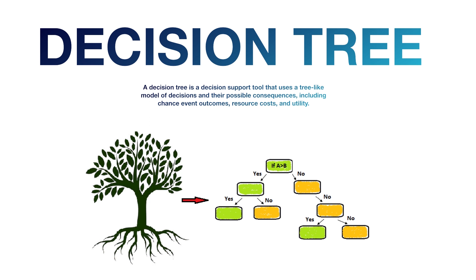Welcome back guys. Let us see what is a decision tree. A decision tree is a decision support tool that uses a tree-like model of decisions, with possible consequences including chance events, outcomes, resources, cost, and utility. For example, in computer-coded programming, if A is greater than B.